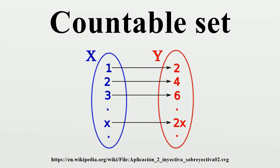Consider the sets A = {1, 2, 3, ...}, the set of positive integers, and B = {2, 4, 6, ...}, the set of even positive integers. Under our definition, these sets have the same size, and therefore B is countably infinite. To prove this we need a bijection between them, which is easy using n ↔ 2n, so that 1 ↔ 2, 2 ↔ 4, 3 ↔ 6, 4 ↔ 8. Every element of A has been paired off with precisely one element of B and vice versa. Hence they have the same size. This is an example of a set of the same size as one of its proper subsets, which is impossible for finite sets.